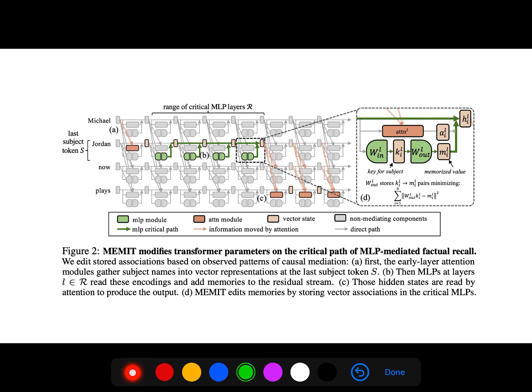The early layer attention modules gather up subject names into vector representation at the last subject token s. Then MLPs at layers l read these encodings and add memories to the residual stream. In C, you see that those hidden states are read by attention to produce the output. It edits memories by storing vector associations in the critical MLPs.